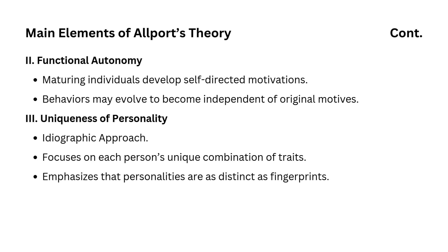Allport introduced the concept of functional autonomy, which suggests that as people mature they develop motivations that become self-directed and independent of their original reasons. This means that while a behavior might begin for one reason, over time it can evolve and take on new significance. For example, consider a person who starts playing the piano because their parents encouraged them to do so. Over time, they may develop a genuine love for music, playing not to please their parents but because they enjoy it. This shift reflects the concept of functional autonomy.